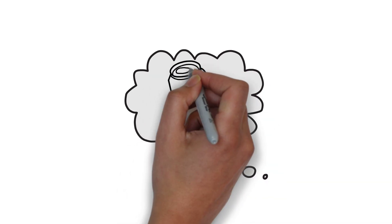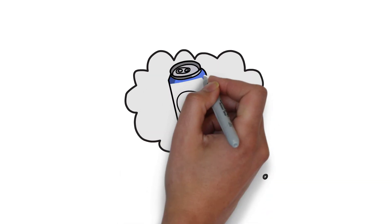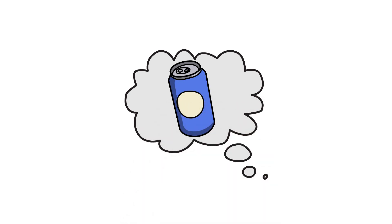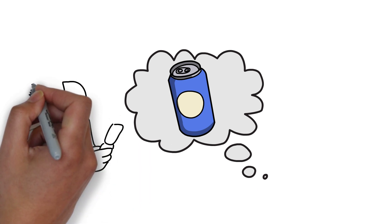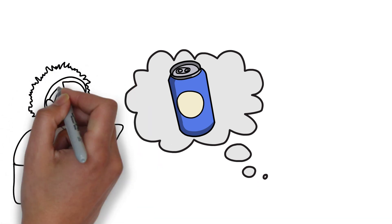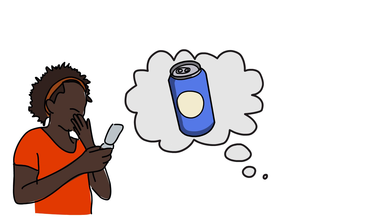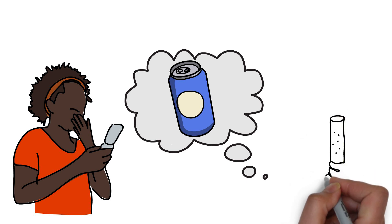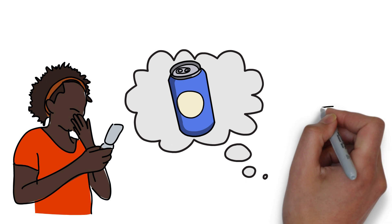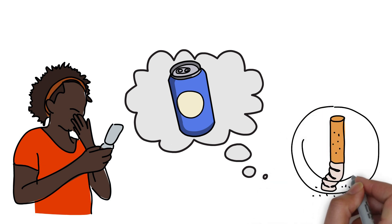Consider giving up one habit that's costing you money, perhaps on a daily basis, and dedicate that expense to a savings account instead. For instance, if you have a morning coffee habit, it can cost you over $1,000 per year if you pay $3 per day for your morning caffeine fix. Some people smoke cigarettes and gladly spend $8 per pack, not realizing that this habit adds up to $240 per month at just one pack per day.